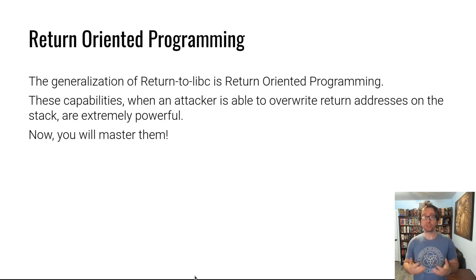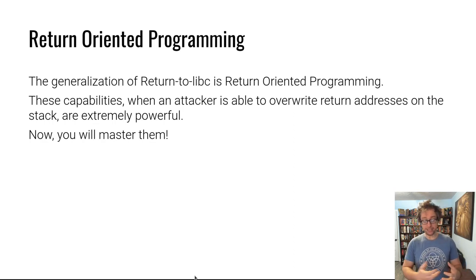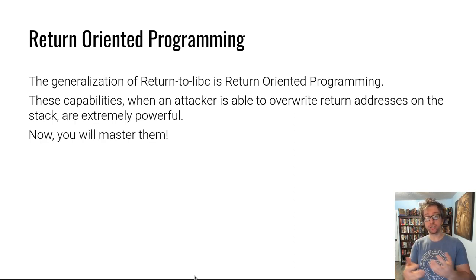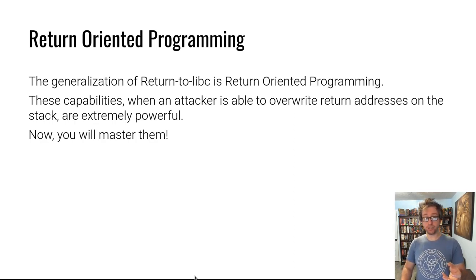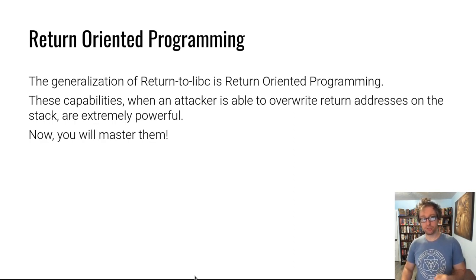ROP is a generalization of the technique of return-to-libc — it returns to anywhere. It basically allows you to take the capabilities you achieve by overflowing the stack, including controlling return addresses, being able to jump partway into instructions or partway into functions, and chain these returns one after another to achieve the goals you want in exploitation. In this module you'll learn all about this, master it, and truly be able to subvert a program — make it do something it was absolutely never designed to do — by using its own binary code against it.